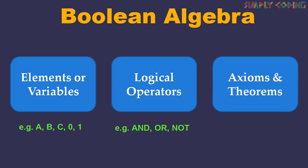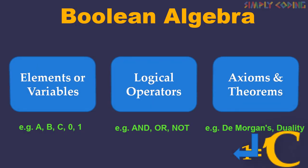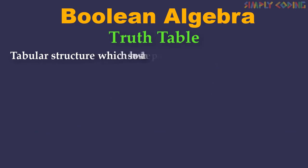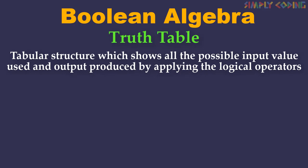Then there are axioms and theorems such as De Morgan's theorem, duality theorem, etc. These elements and operators form Boolean expressions which are solved using various axioms and theorems, to prove if expressions are equal or test if theorems are valid. Many times we use truth tables. A truth table is a tabular structure which shows all the possible input values used and output produced by applying the logical operators.